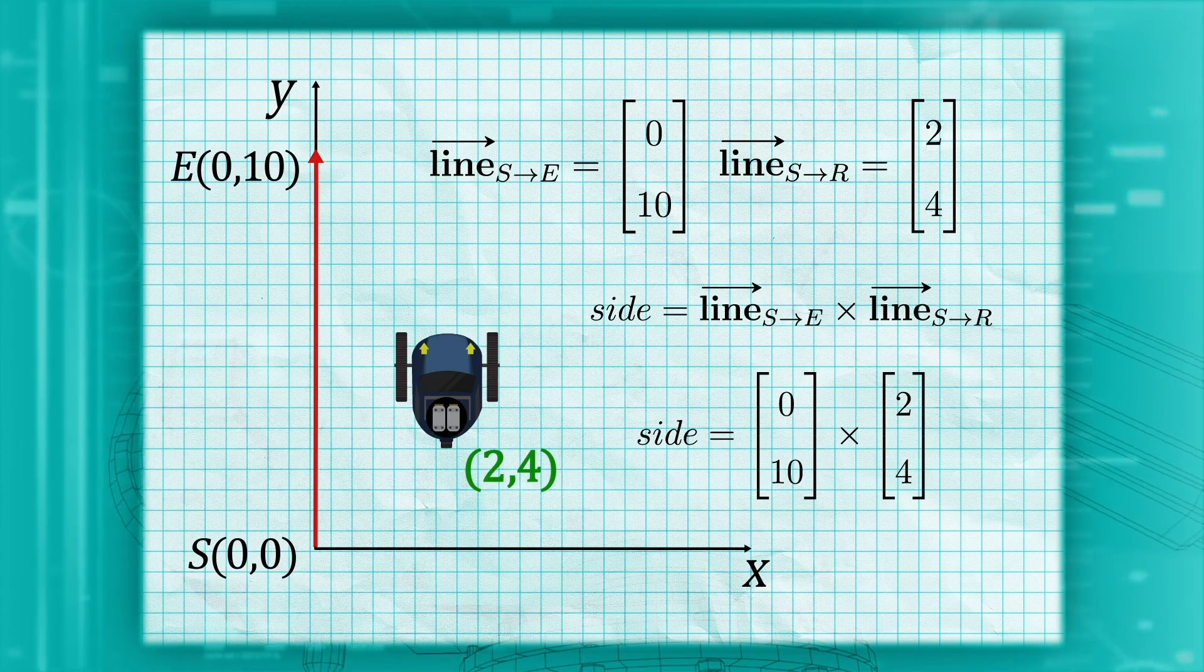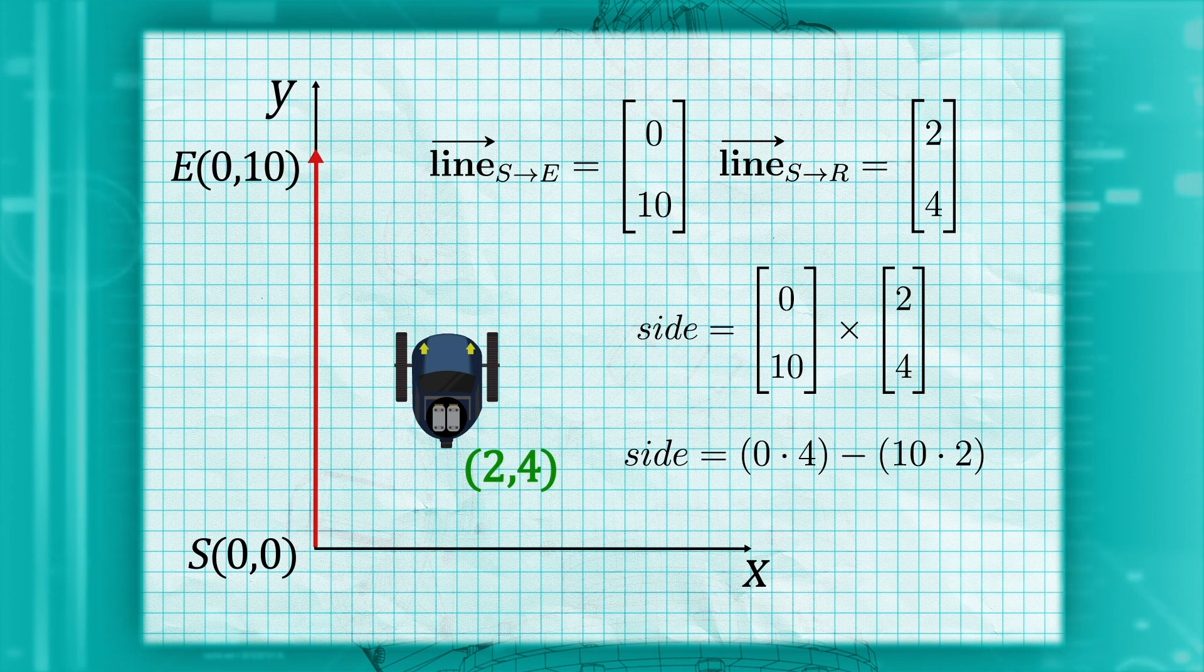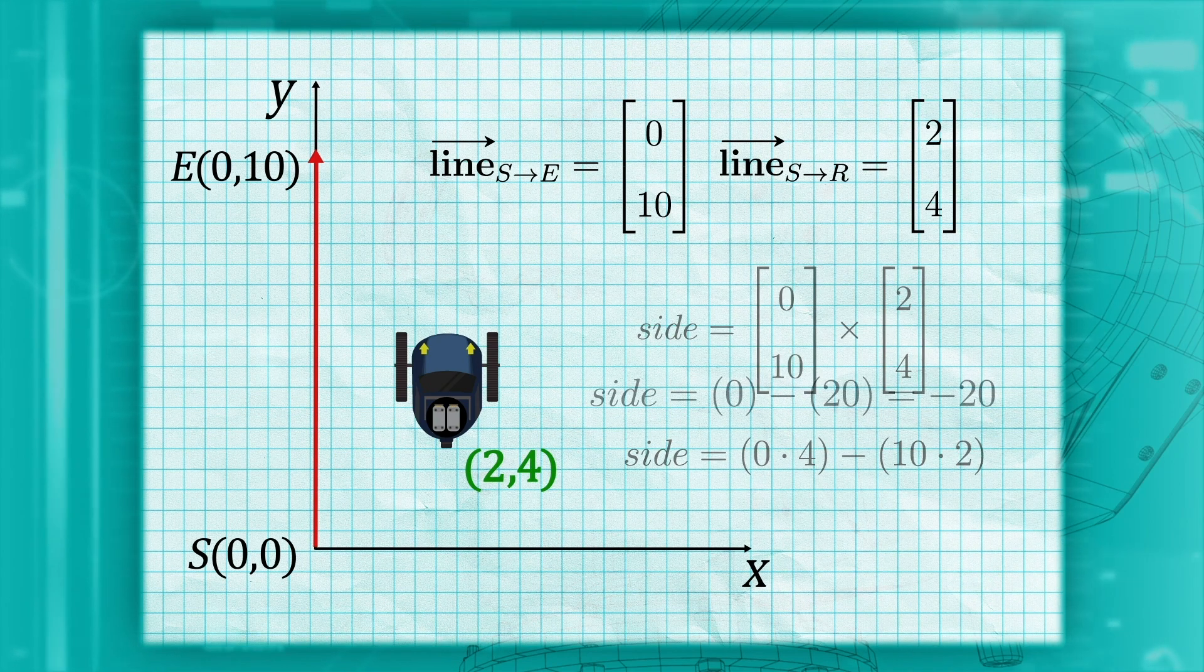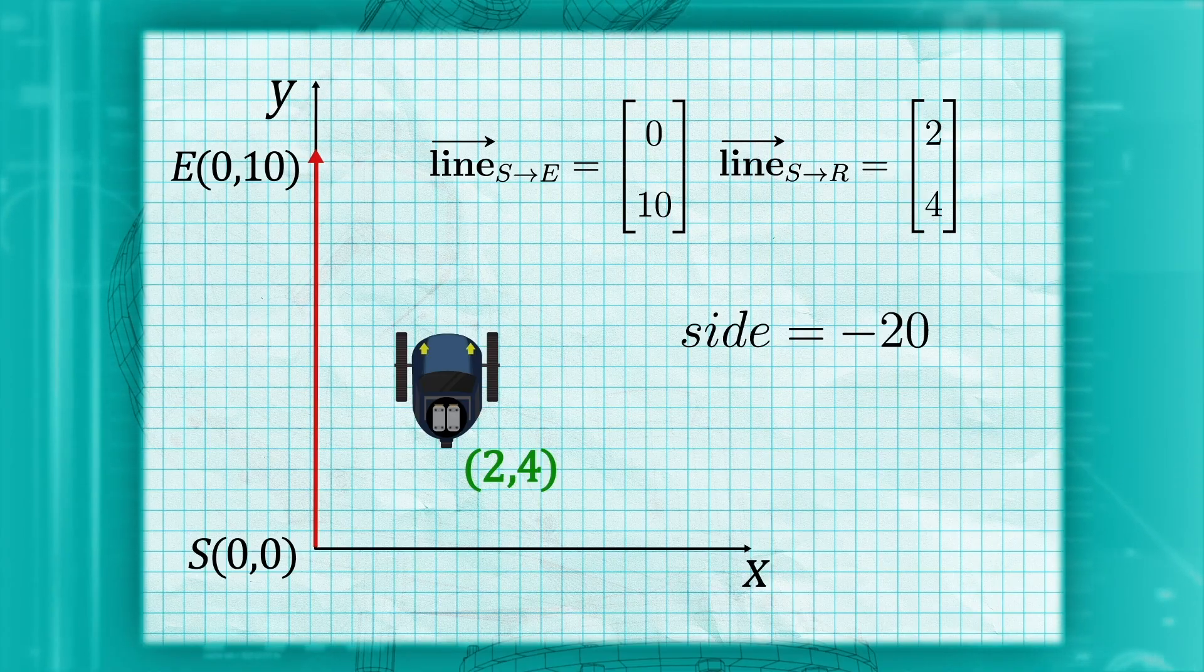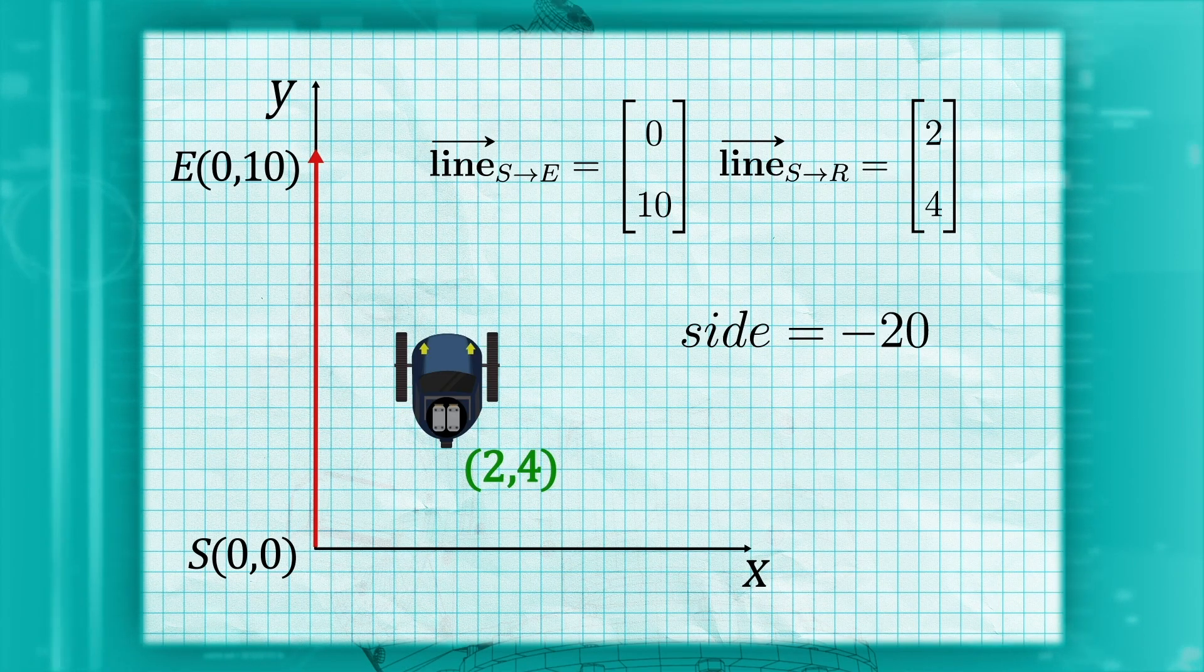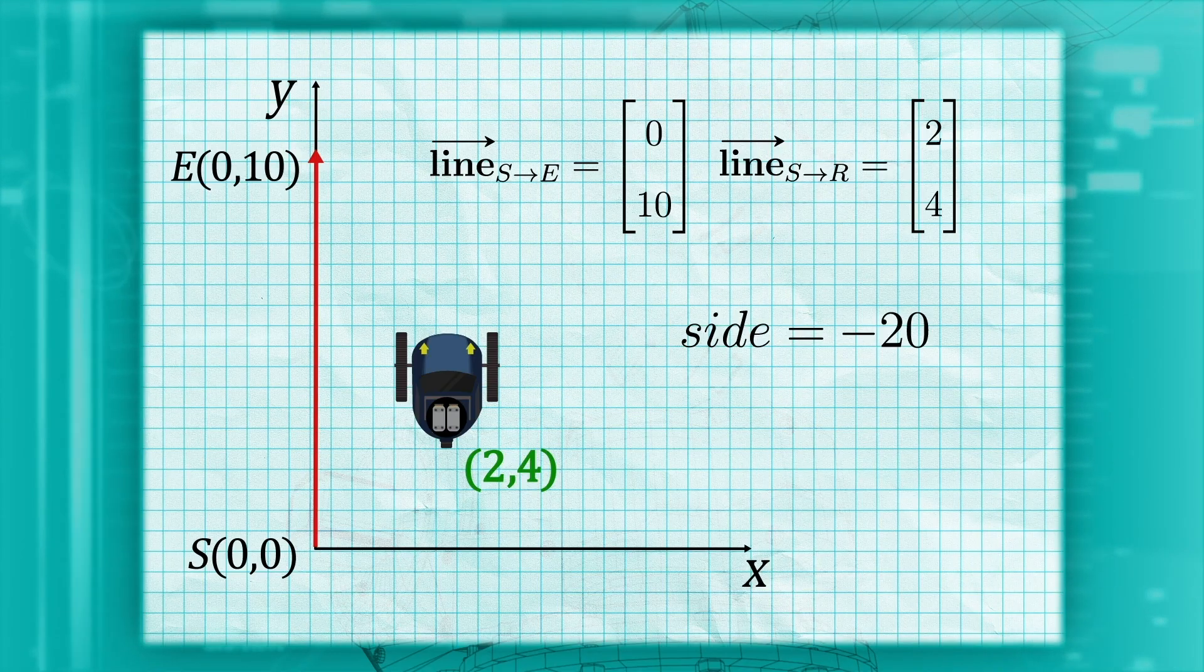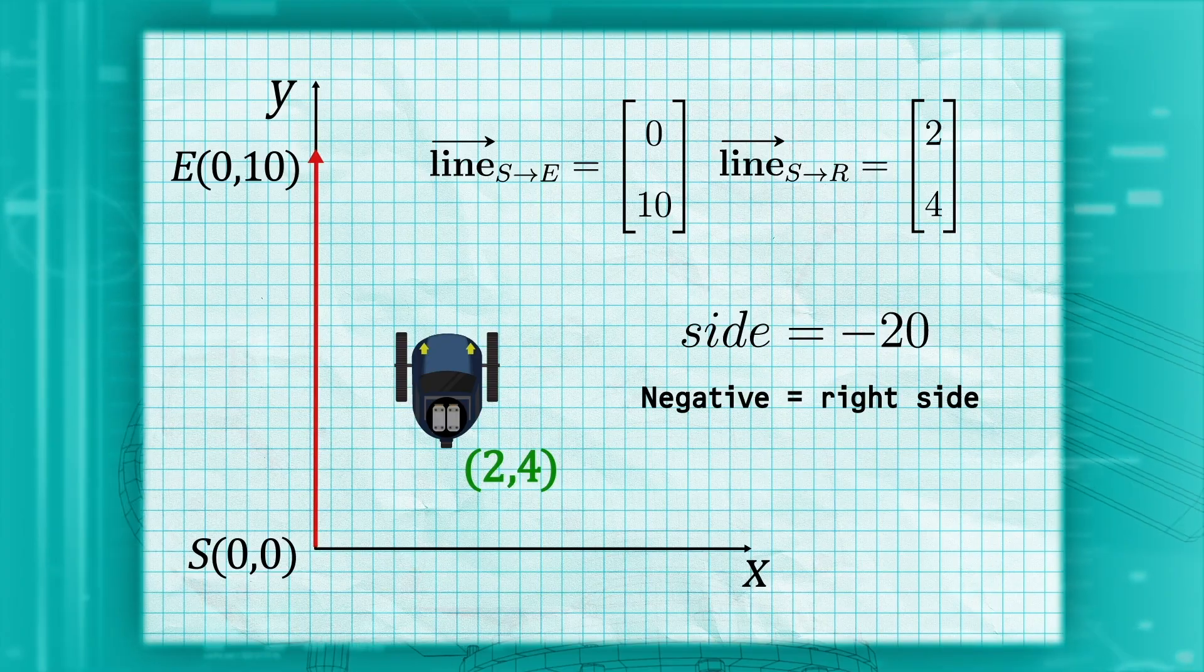In our case, that would be 0 times 4 minus 10 times 2, giving us 0 minus 20 or negative 20. The number isn't important to us here, however. What we want is the sign of the answer. Since the answer is negative, we know we are on the right side of the line.